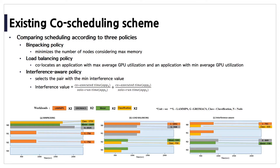Let's compare an interference-aware policy with existing cluster concurrent execution policies. Among the existing policies, bin packing schedules based on max memory and tries to minimize running nodes. Load balancing policy avoids interference in a naive manner by co-locating an application with max average GPU utilization with one that has mean average GPU utilization. Lastly, the interference-aware policy selects a pair with a minimum interference value and executes them concurrently. We define interference value as co-executed time of an application normalized by its solo runtime.